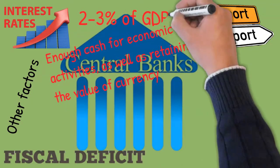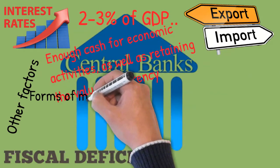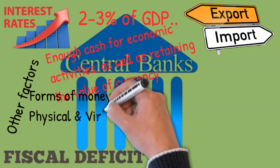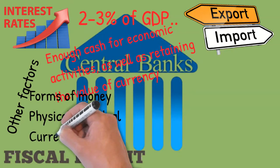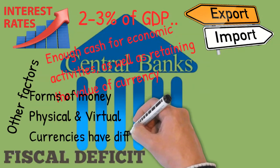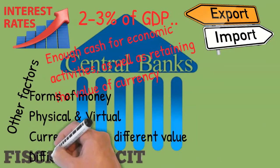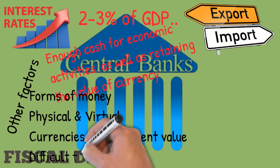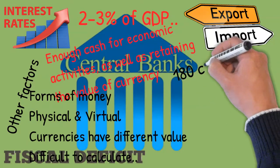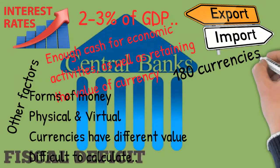Usually the central bank prints around two to three percent of the total gross domestic product, but it can vary according to the country, as developing countries usually print more than two to three percent of their GDP. Since money is present in various forms — both virtual and physical — and in different currencies with different values, it's very difficult to determine the exact amount of money altogether.